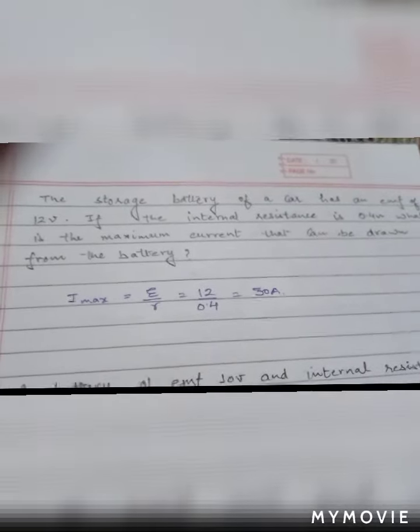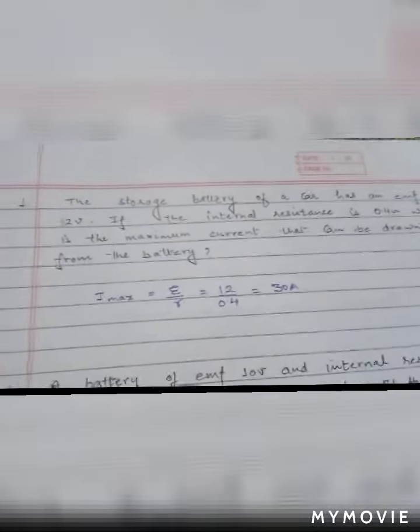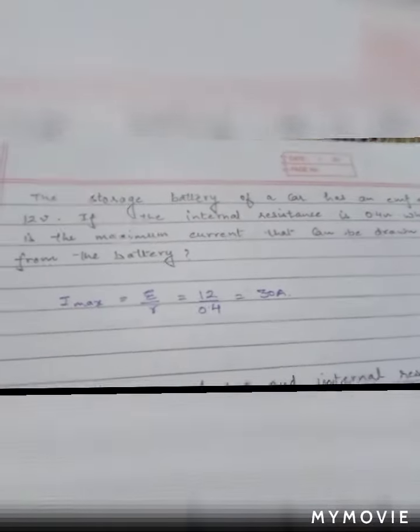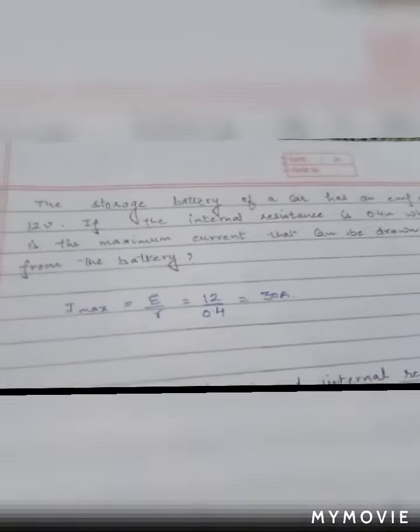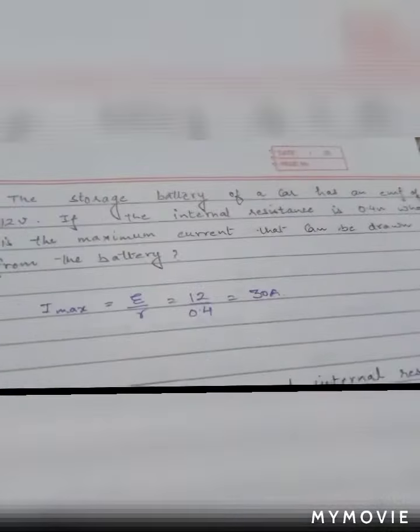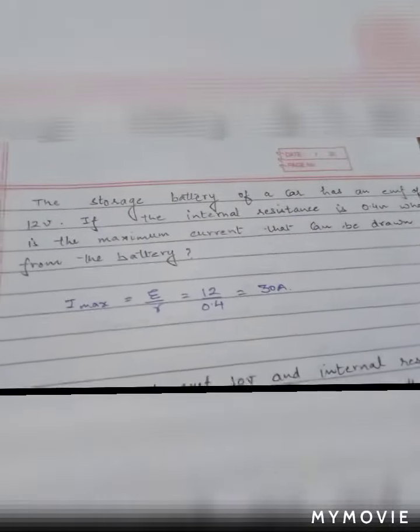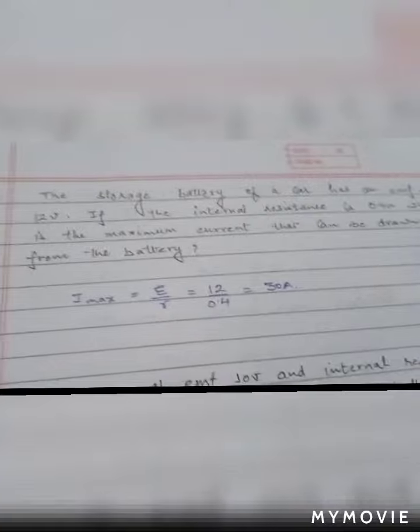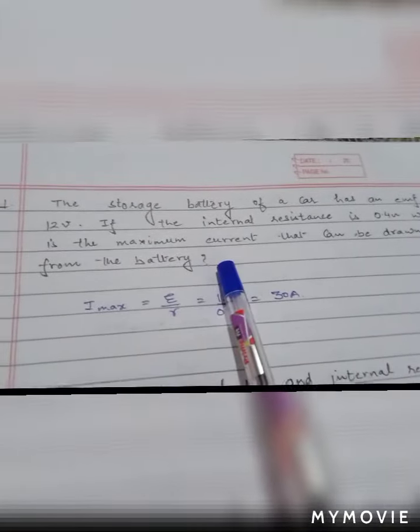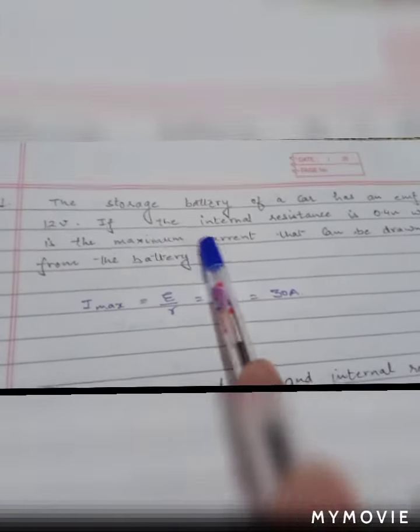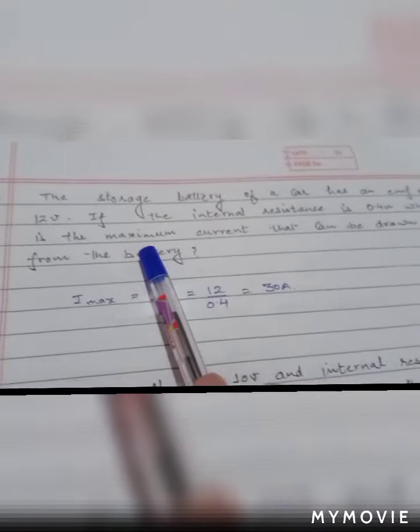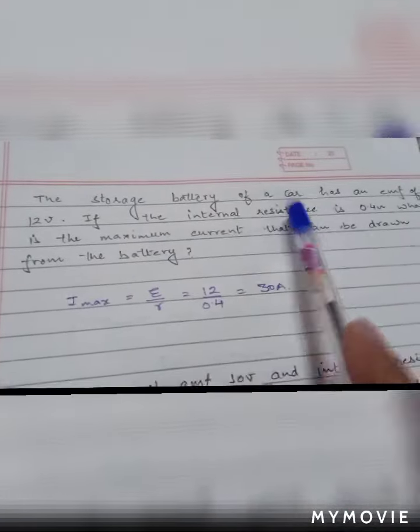The chapter is current electricity and the question is given as: the storage battery of a car has an emf of 12 volt. If the internal resistance is 0.4 ohm, what is the maximum current that can be drawn from the battery? There is a battery and from this battery you have to draw the maximum current.